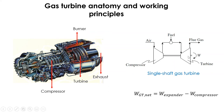In the turbine, the gas is expanded to produce power to drive the compressor. Around two-thirds of the power produced by the turbine is needed to drive the compressor.